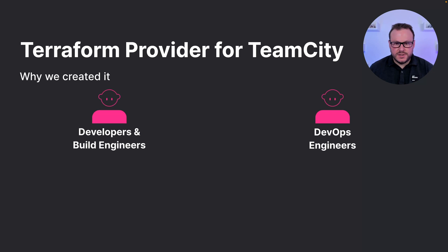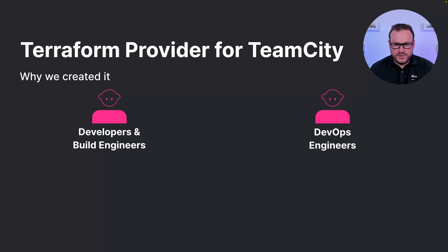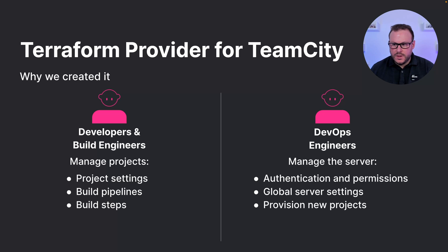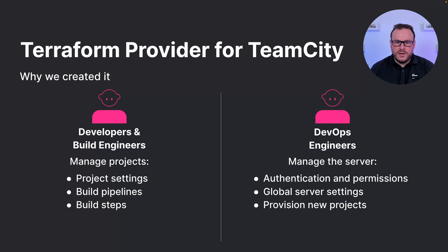In a typical organisation we may have developers, build engineers, and DevOps engineers. Developers and build engineers may be more focused on managing individual projects — such as individual project settings, creating build pipelines, and configuring build steps — whereas DevOps engineers may focus more on server management, such as authentication methods, permissions, global server settings, and provisioning new projects as and when new teams require them.